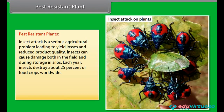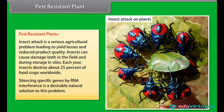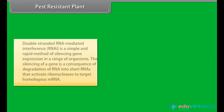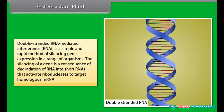Pest resistant plants. Insect attack is a serious agricultural problem, leading to yield losses and reduced product quality. Insects can cause damage both in the field and during storage in silos. Each year, insects destroy about 25% of food crops worldwide. Silencing specific genes by RNA interference is a desirable natural solution to this problem. Double-stranded RNA-mediated interference, RNAi, is a simple and rapid method of silencing gene expression in a range of organisms. The silencing of a gene is a consequence of degradation of RNA into short RNAs that activate ribonucleases to target homologous mRNA.